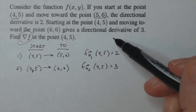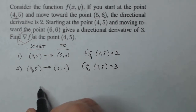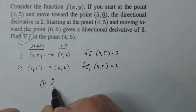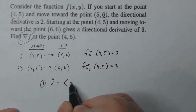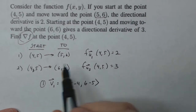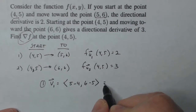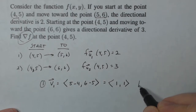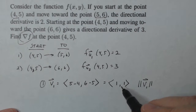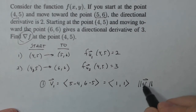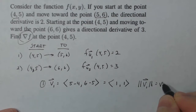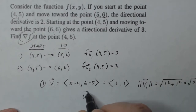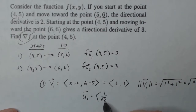What I end up having is two equations in two unknowns, and I just have to set that up. Starting with the information in part one, I find the vector between the two points. That vector is (5 minus 4, 6 minus 5), which gives me (1, 1). I need the unit vector, so I find the magnitude — square root of two. That makes my unit vector (1/√2, 1/√2).